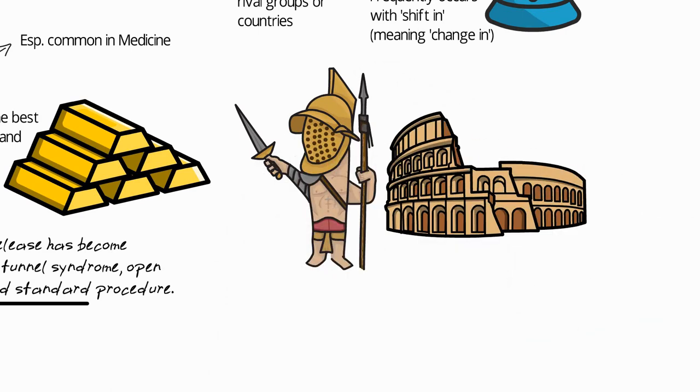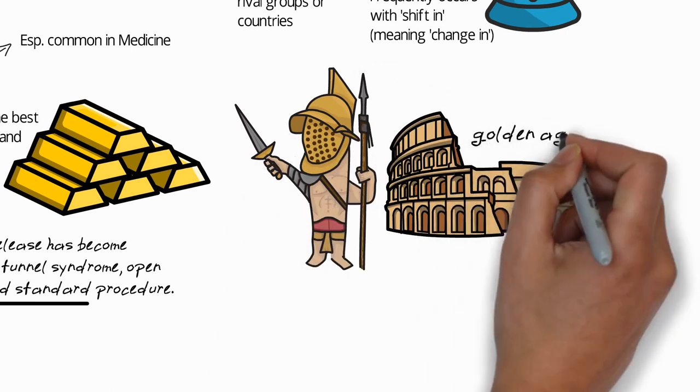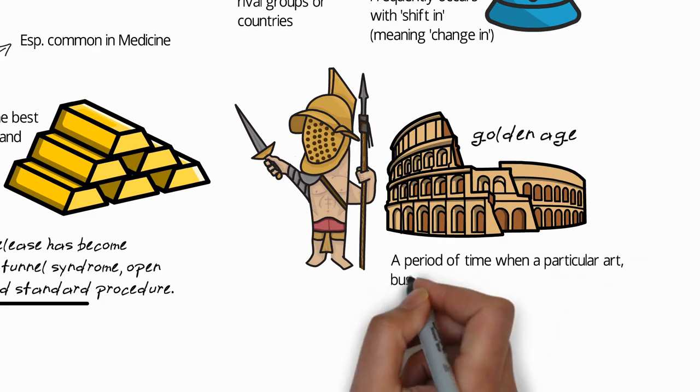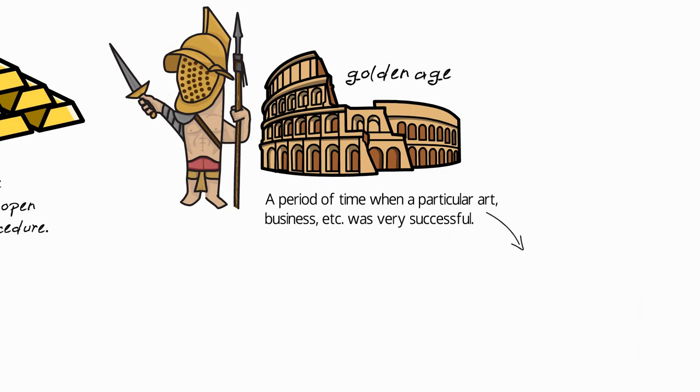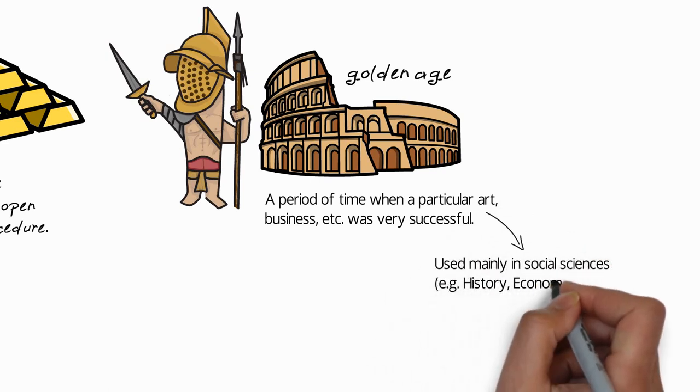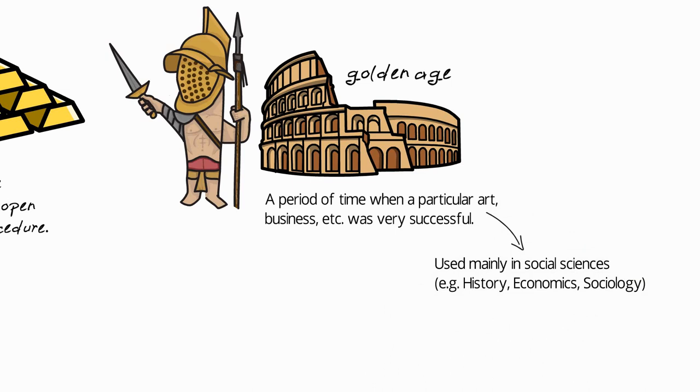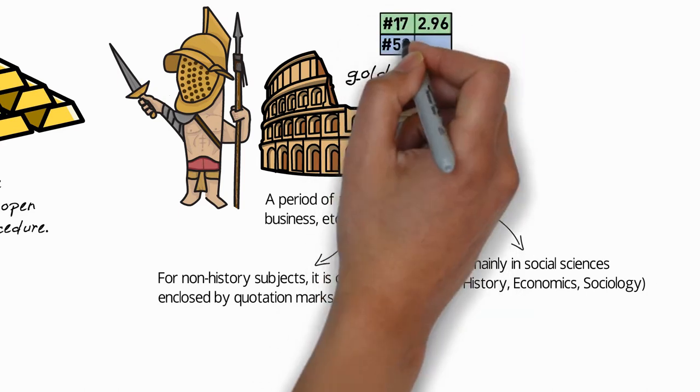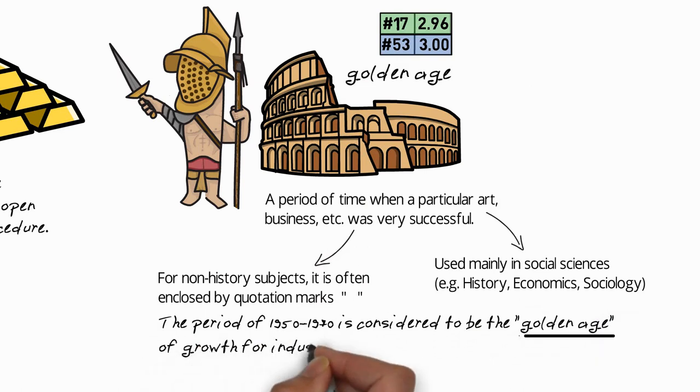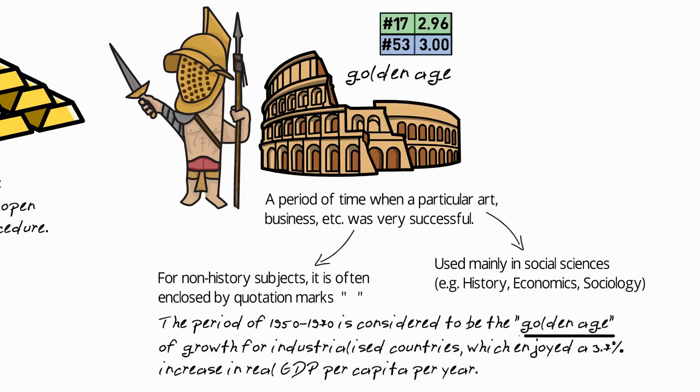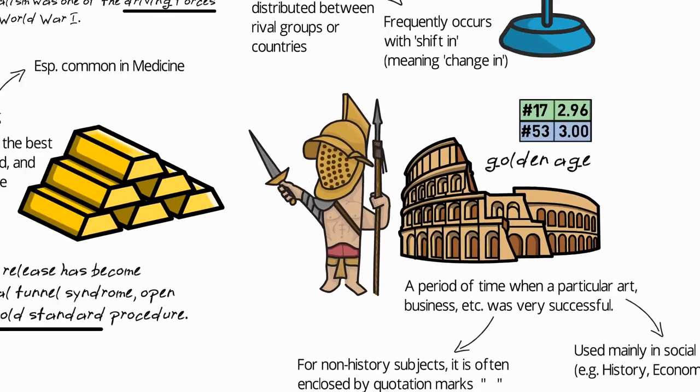The second idiom with the word gold is golden age, and this is a period of time when a particular art or business or so on was very successful. So this idiom is mainly used in social sciences, for example history, economics, sociology. In history it's just used as an idiom, but for non-history subjects it's often enclosed by quotation marks. For example, the period of 1950 to 1970 is considered to be the golden age of growth for industrialized countries, which enjoyed a 3.7 percent increase in real GDP per capita per year.